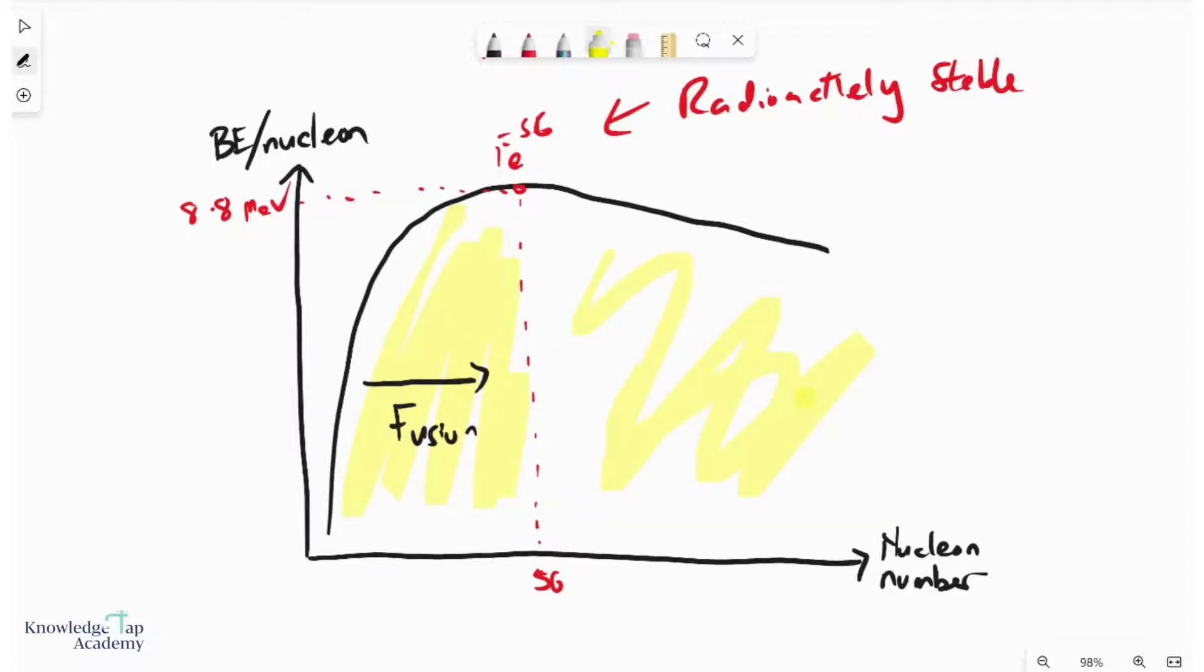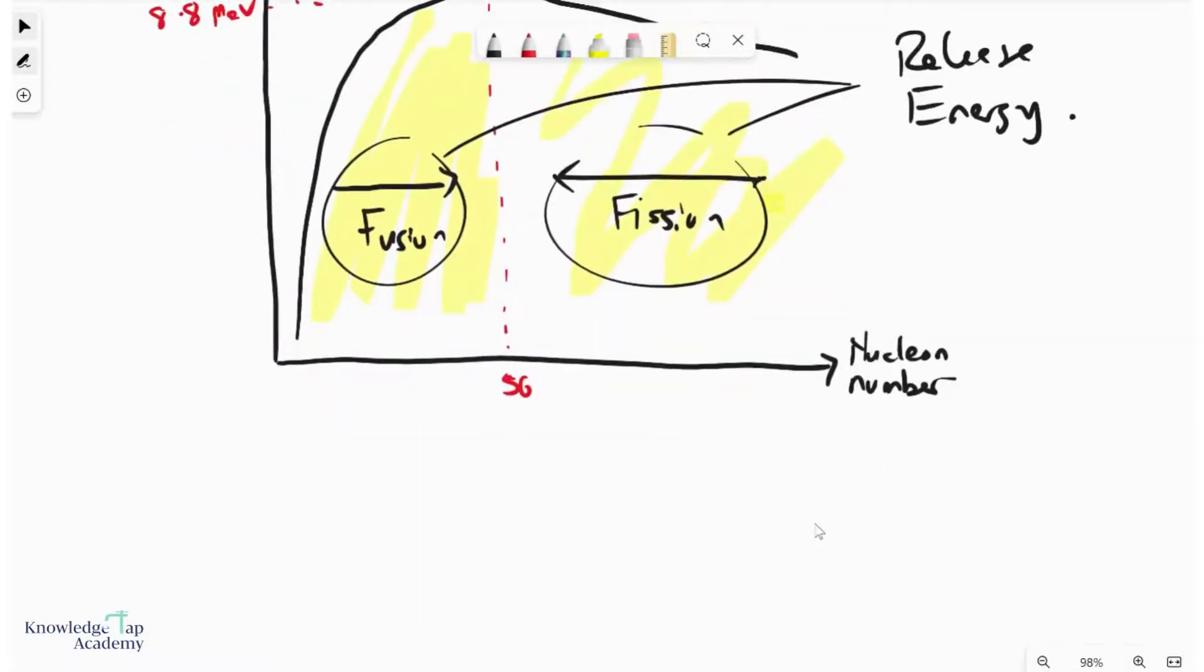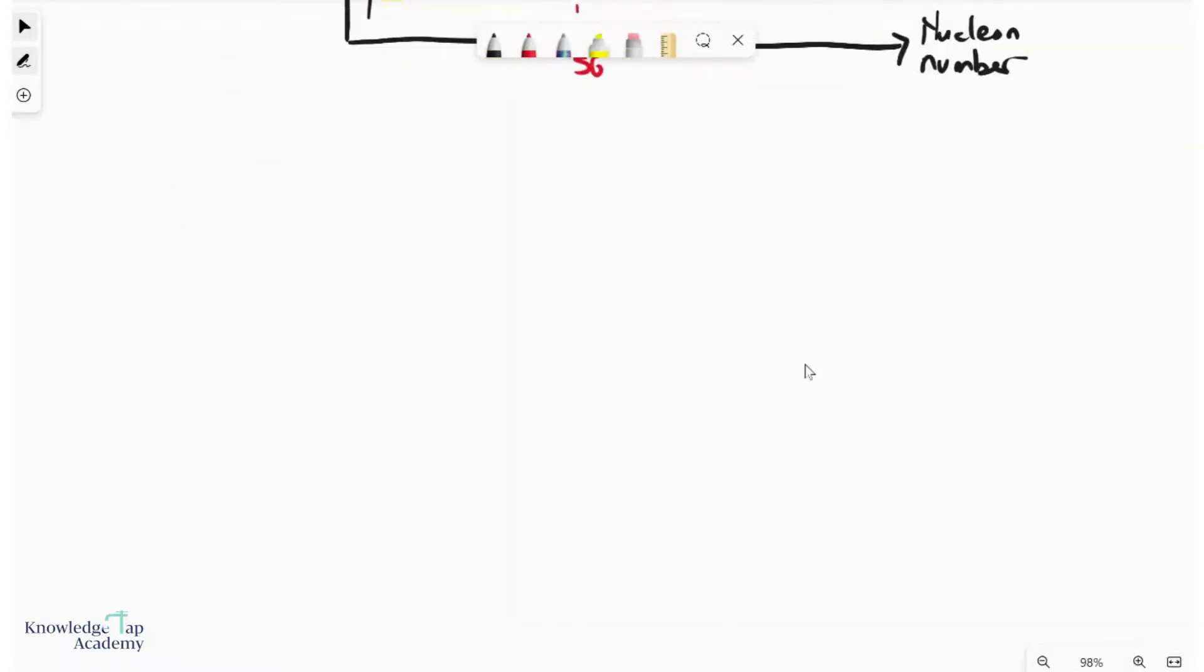Similarly, if you are on the other side of the graph, you are too big—you want to become like iron. So what do you do? You undergo nuclear fission. In the general scenario, as long as you go fusion on this side and fission on this side, your nuclear reactions will always release energy, which is essentially what you want for a useful nuclear reaction—you want it to produce something useful like energy.